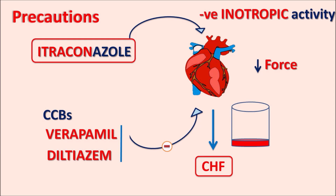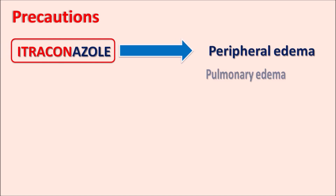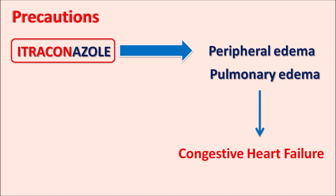Itraconazole can also inhibit the metabolism of calcium channel blockers, increasing their plasma levels and producing more pronounced negative inotropic activity, significantly raising the risk of congestive heart failure. In patients already having edema or symptoms of congestive heart failure such as fatigue and congestion, itraconazole should not be given. Additionally, itraconazole can produce peripheral edema as well as pulmonary edema, which can further worsen congestive heart failure, so any edema in patients should be monitored carefully.